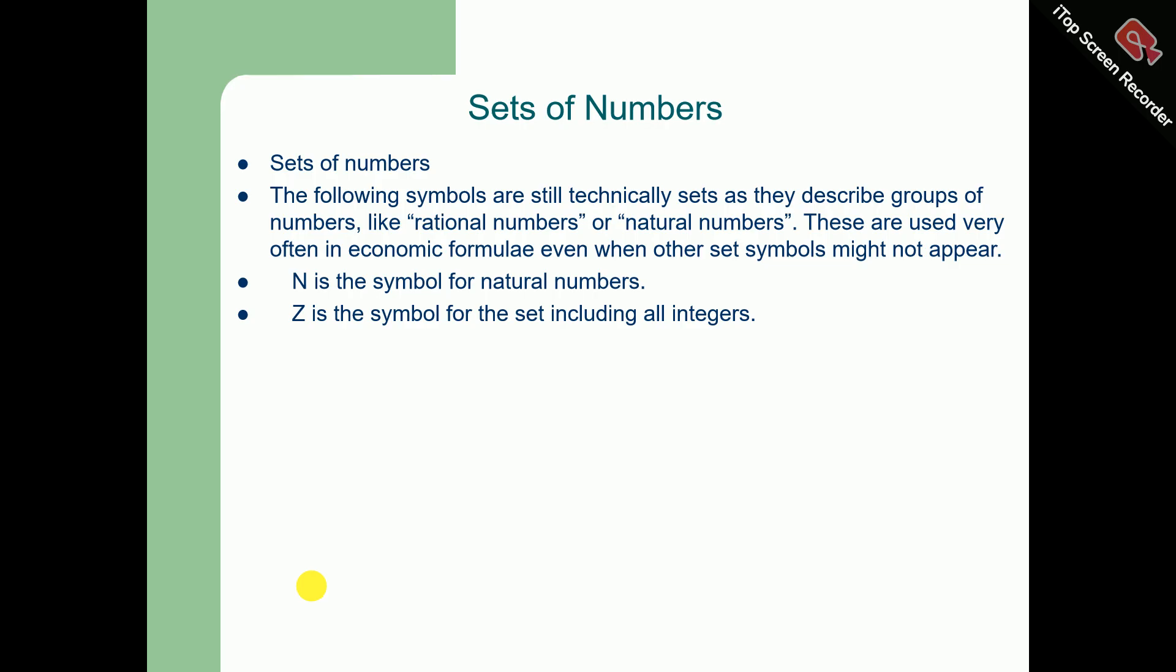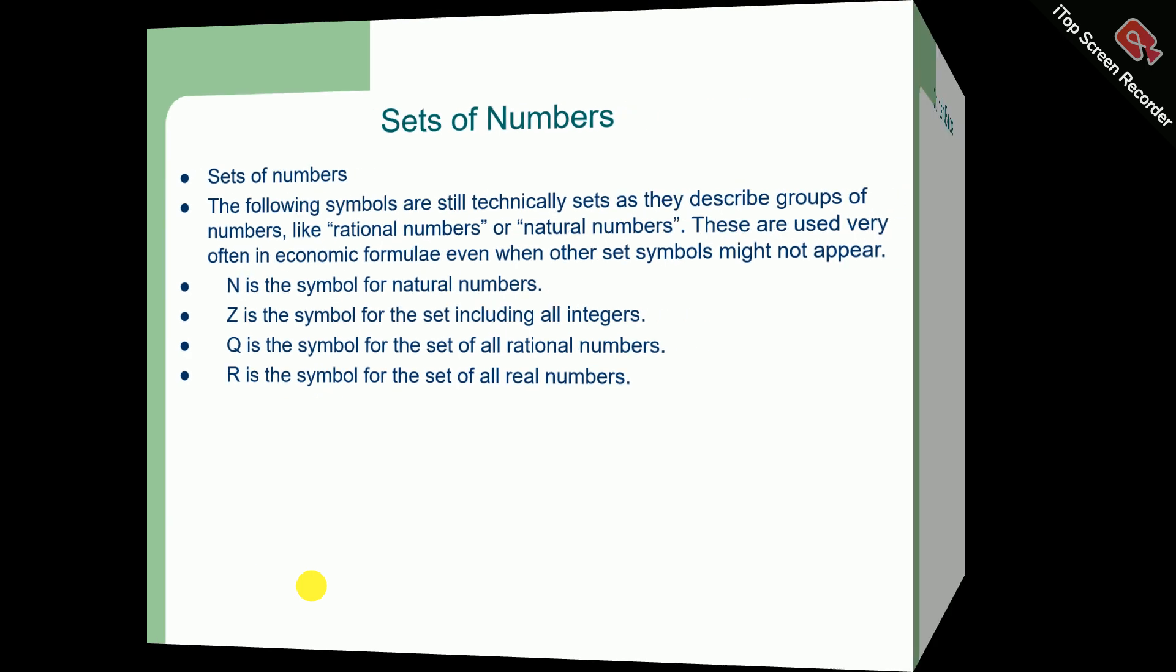Z is the symbol for the set including all integers, both positive and negative. Q is the symbol for the set of all rational numbers. Whereas R is the set for the set of all real numbers. These are various set notations.